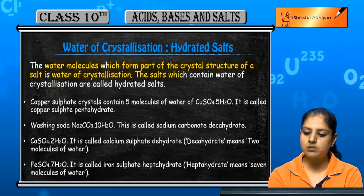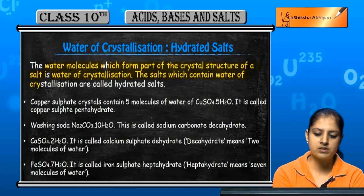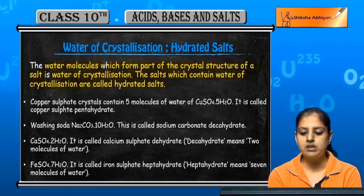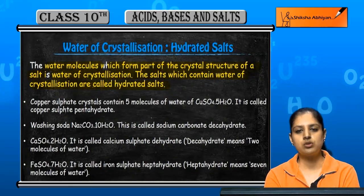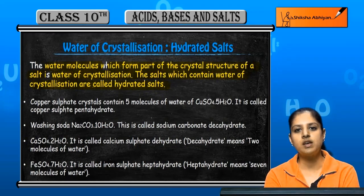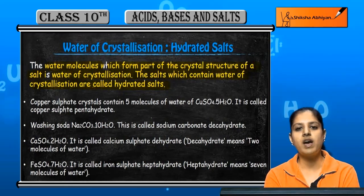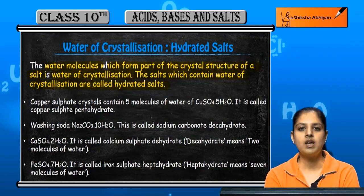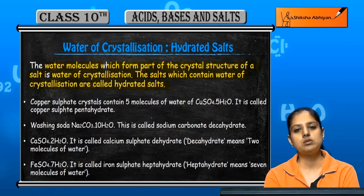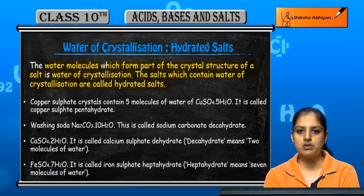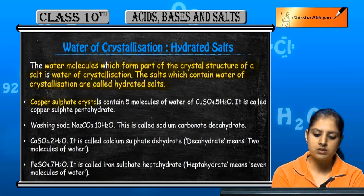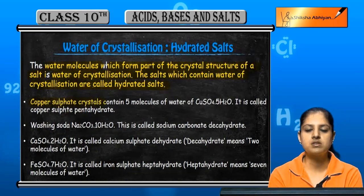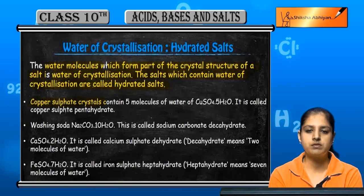The salts which contain water of crystallization are called hydrated salts. The salts which do not contain water of crystallization are called anhydrous salts — anhydrous means without water of crystallization. For example, copper sulfate crystals.